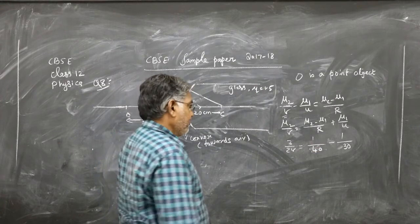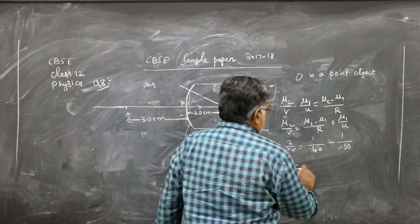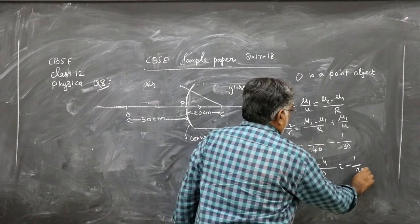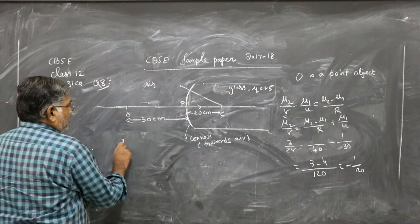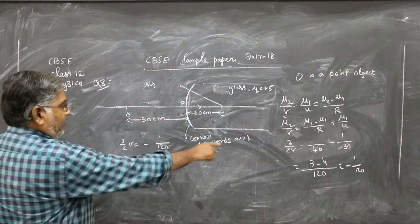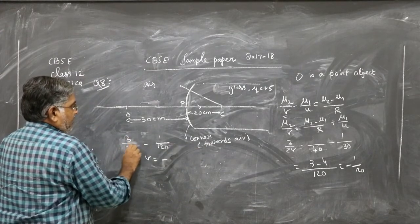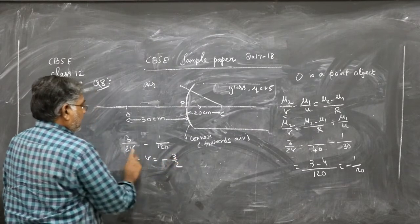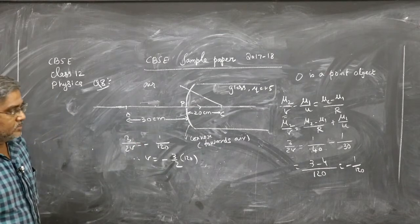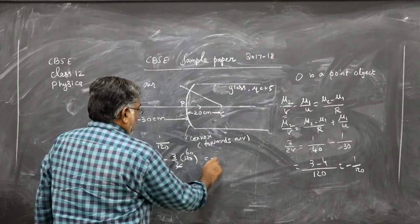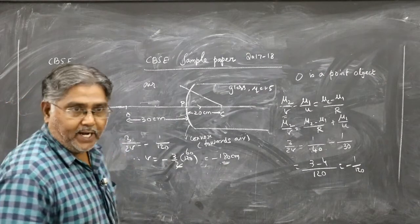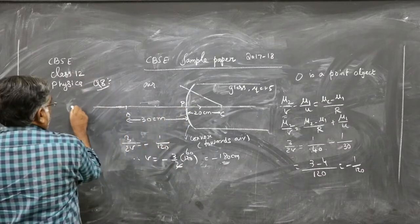So: 1/40 − 1/30 = 3/(2v). Taking LCM of 120: (3 − 4)/120 = −1/120. Therefore 3/(2v) = −1/120, giving v = −(3/2) × 120 = −180 cm. The image is formed at a distance of 180 cm in front of the convex surface — since the object is at 30 cm, the image forms further back on the same side.